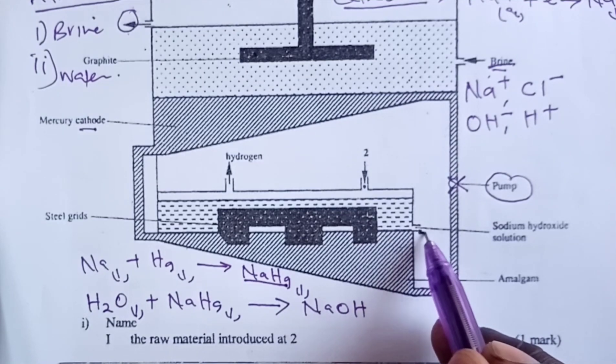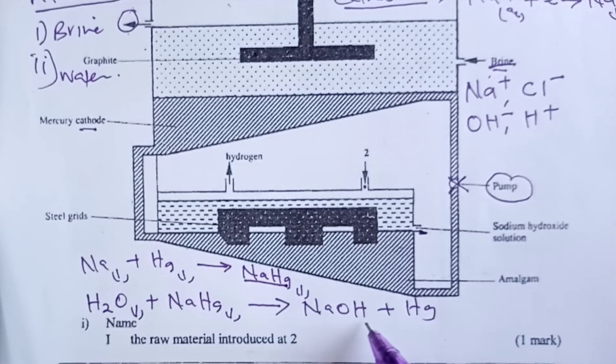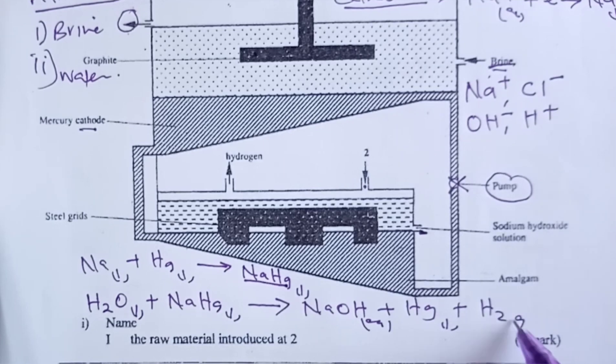We are able to get sodium hydroxide which can then move through this opening. We are able to recycle our mercury, and we also get hydrogen gas.